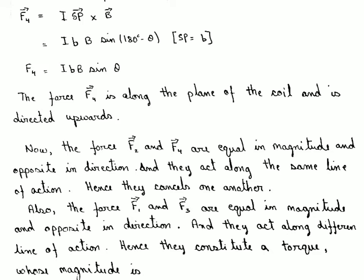F2 is directed downwards and F4 is directed upwards, so they are opposite to one another and act along the same line of action — along the axis of the coil. Both have magnitude IBb sin theta, so they are equal in magnitude, opposite in direction, and act along the same line of action, meaning they cancel one another.